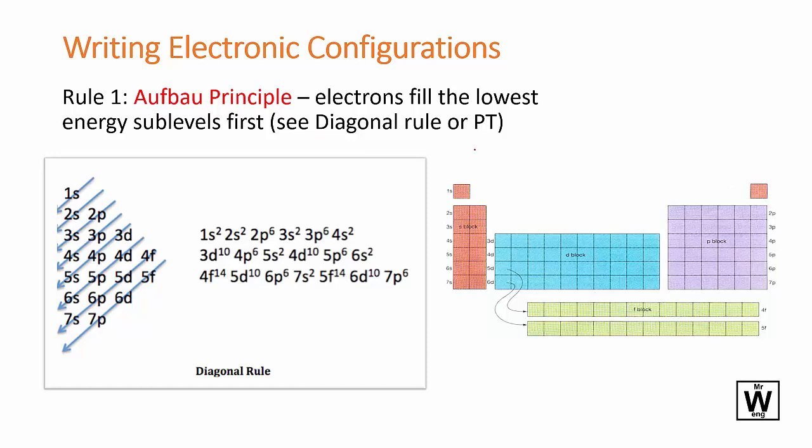So the Aufbau principle means you just follow the lowest to highest order, so you fill in the lowest energy levels first. If you're using the periodic table you just fill in the 1s first and then you work your way down, and then you go to 2s and then 2p and then 3s and then 3p and then 4s. You just have to realize this is not 4d and this just drops a little and it's 3d.